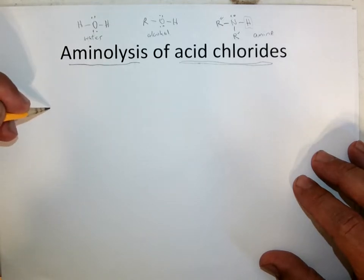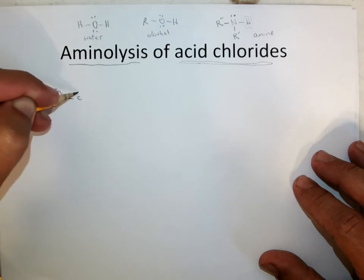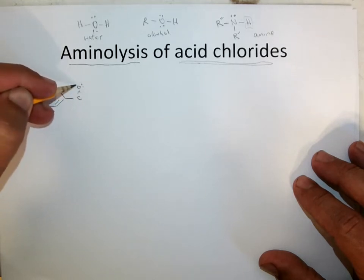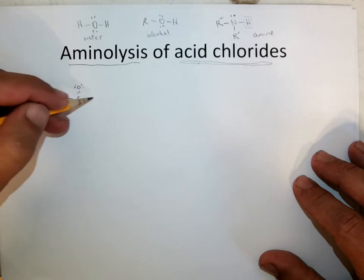Again, we'll pick an acid chloride that might be interesting. So let's go with, put a phenyl group on there, and then a carbonyl, and the chloride.